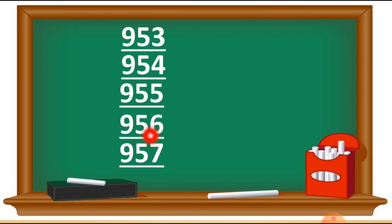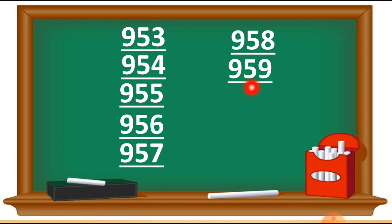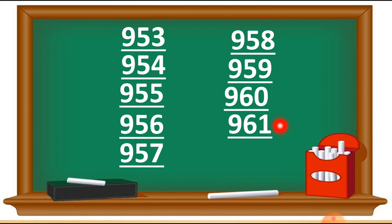After 57, number 58 comes — write 958. After 58, number 59 comes — write 959. After 59, the number 60 comes — write 960. After 60, number 61 comes — write 961. After 961, number 962 comes. This way we complete this table.